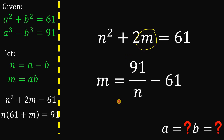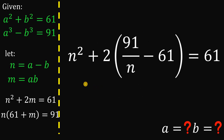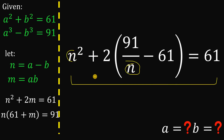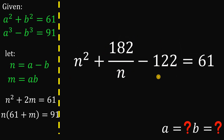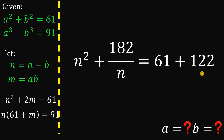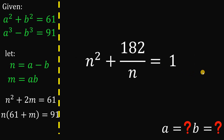We substitute this expression for m — that is, 91 over n minus 61 — into the first equation. We now have a single equation with only one variable, n. Distributing the 2 into 91 over n minus 61 gives 182 over n minus 122. Adding 122 to both sides gives n squared plus 182 over n equals 61 plus 122, which is 183.